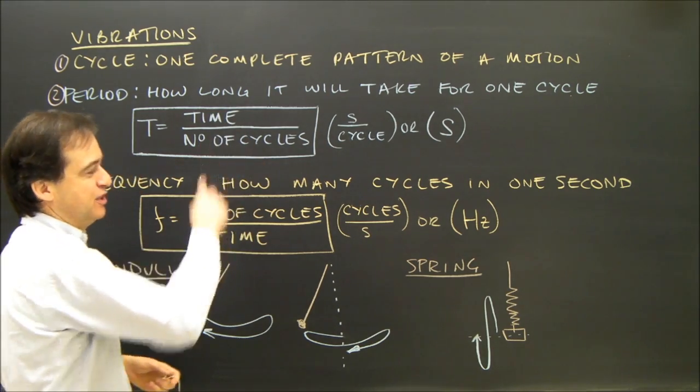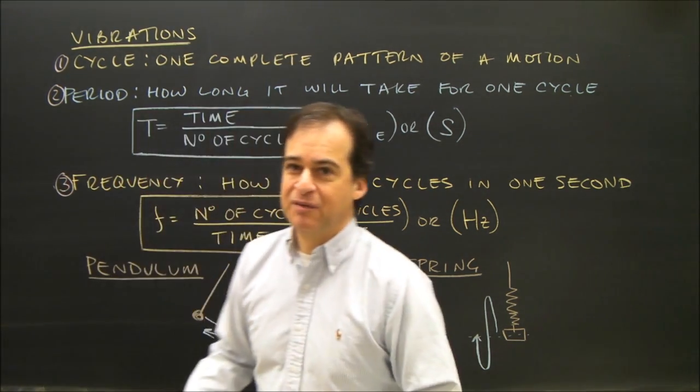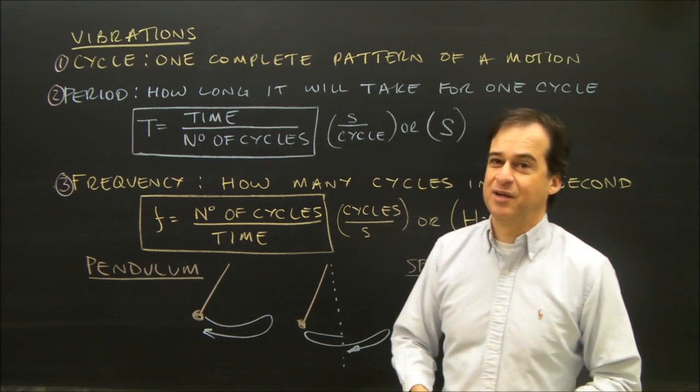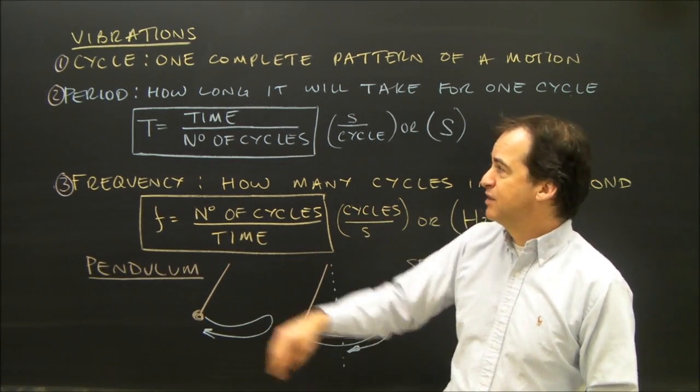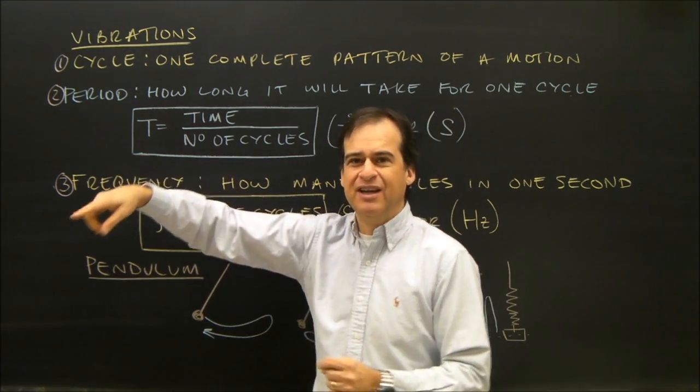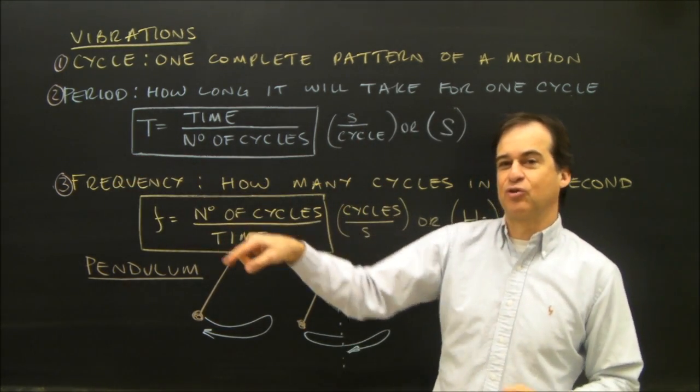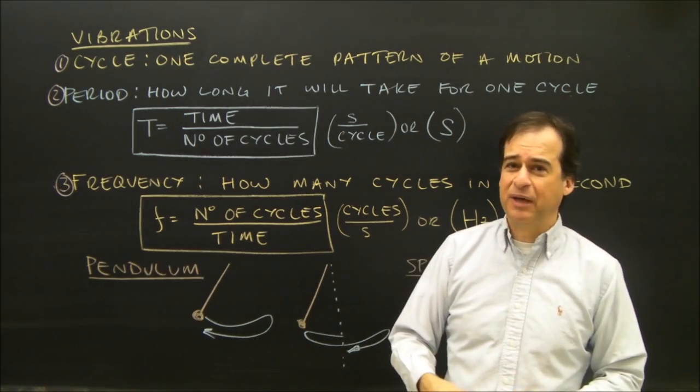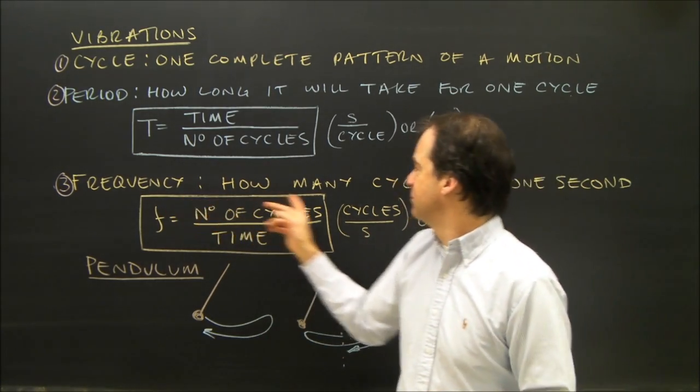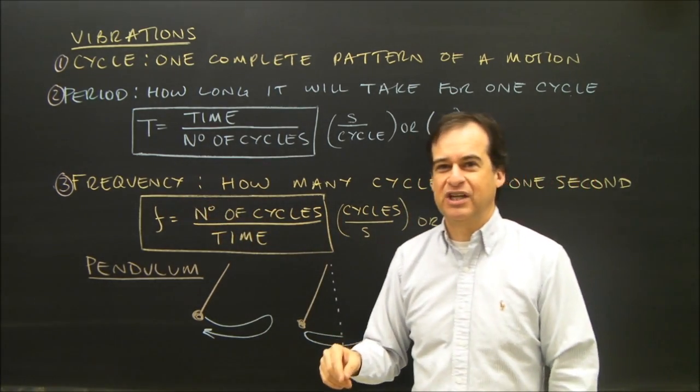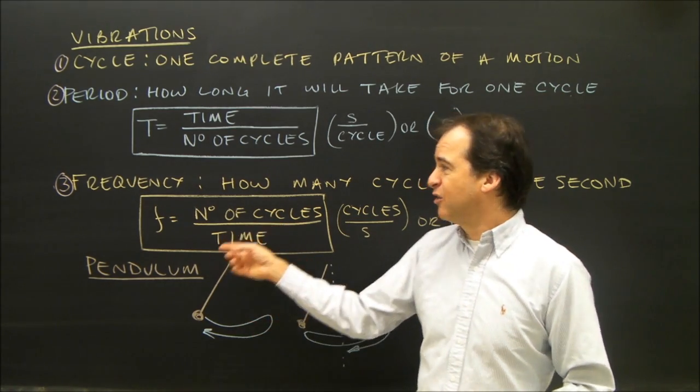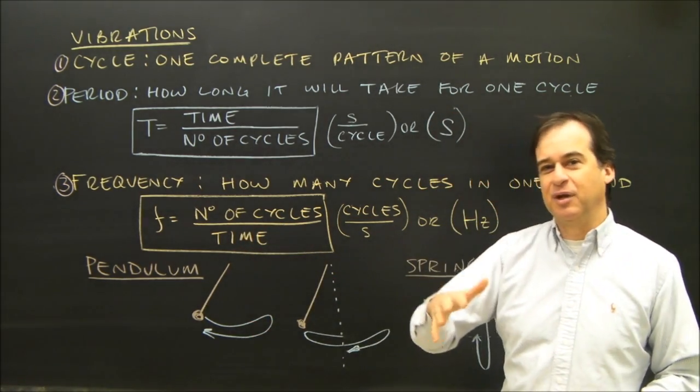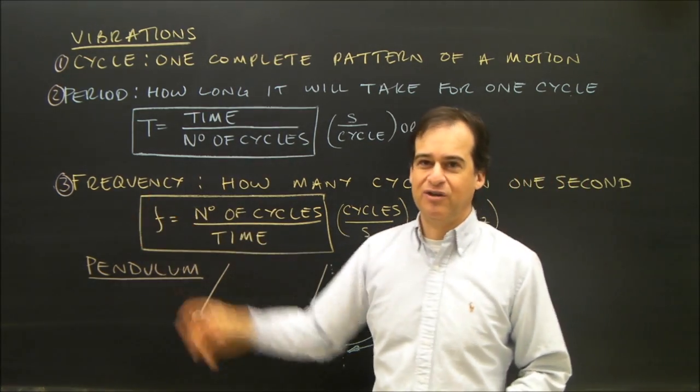Now, which you use depends on the situation, because there are two ways of looking at the same thing. For example, if I'm talking about the earth going around the sun, it makes more sense to describe its period. It takes a long time for the earth to go around the sun, so its period is a very big number. But, how many times does the earth go around the sun in one second? The earth doesn't go around the sun in one second. So, it's not very good to describe its frequency, because it would be like 0.000000, very tiny number.